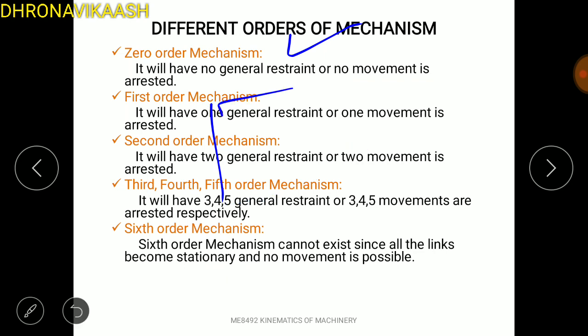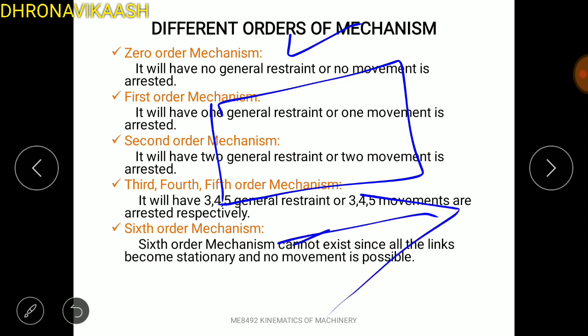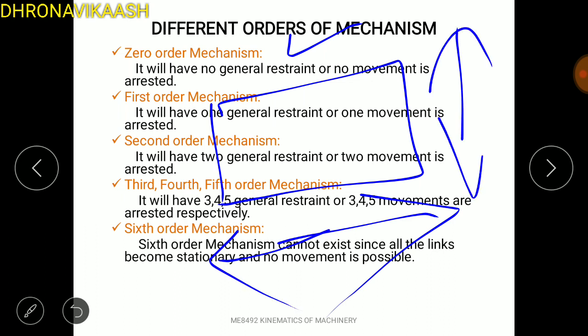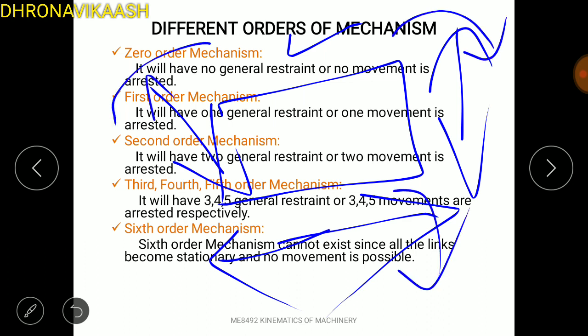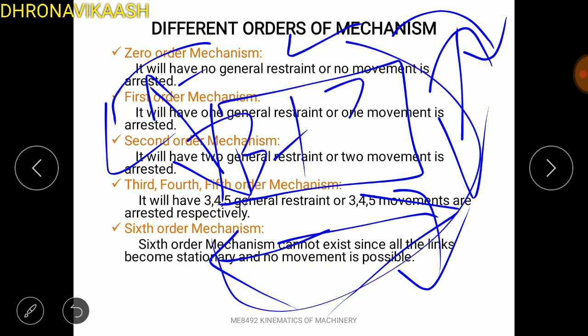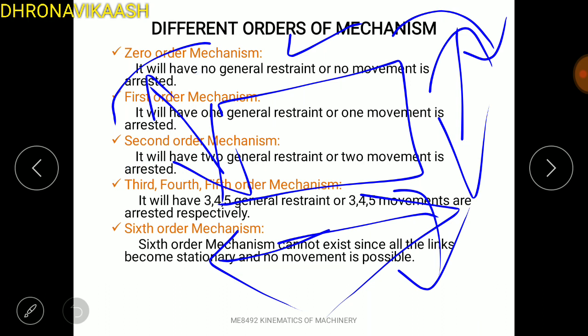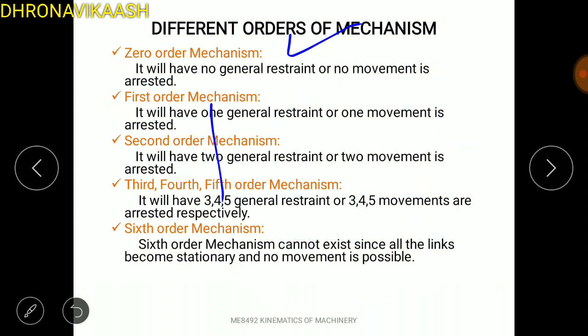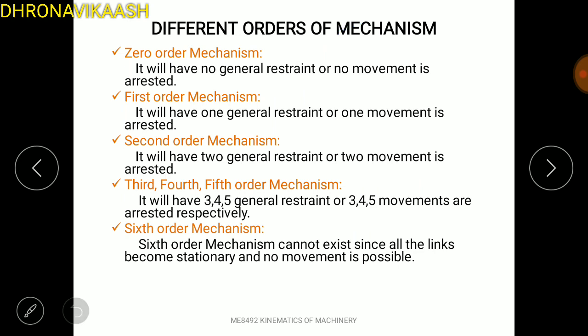First order mechanism — there is one degree of freedom. If you look at the movement, you can see motion in the left side, right side, up side, down side, along the Z axis, and rotation. One degree of freedom is first order mechanism. Two degrees of freedom is second order mechanism. Three degrees of freedom is third order mechanism.